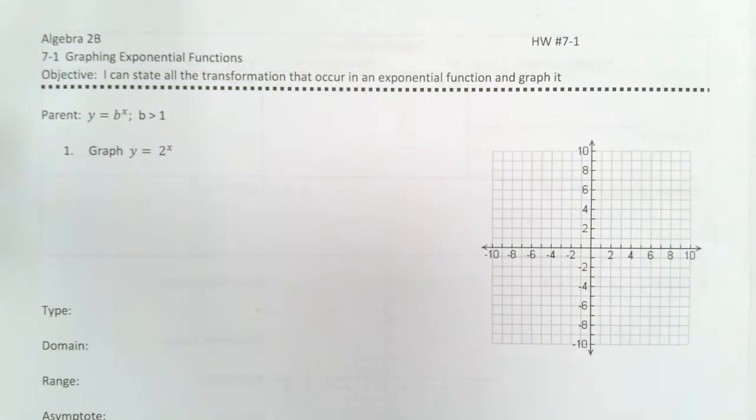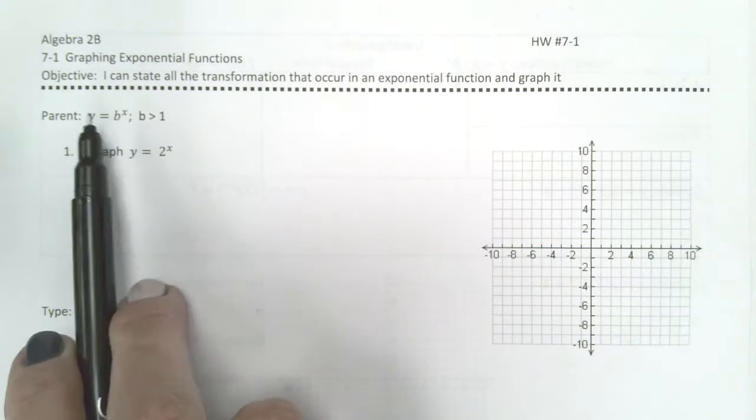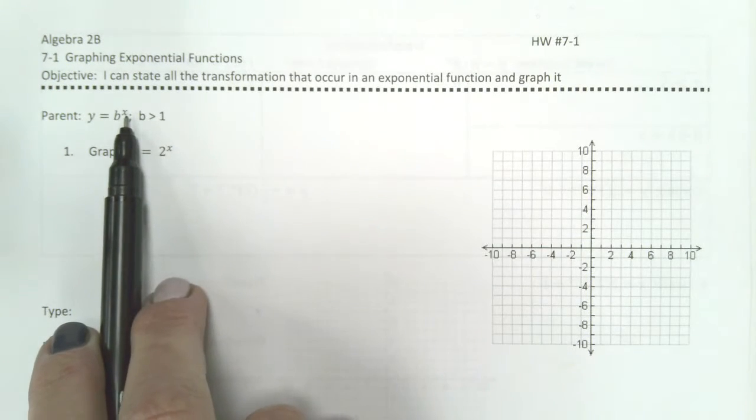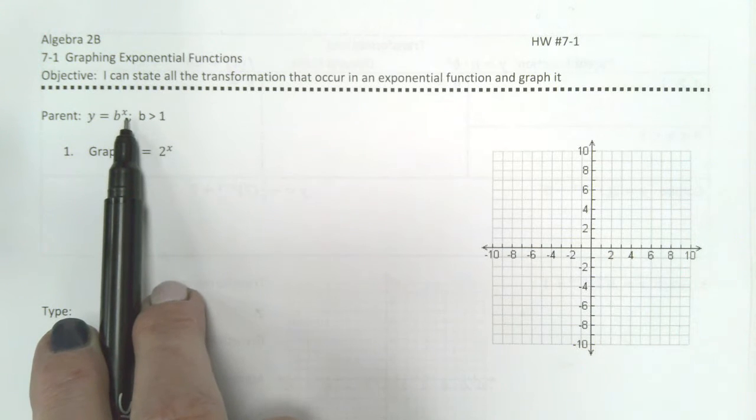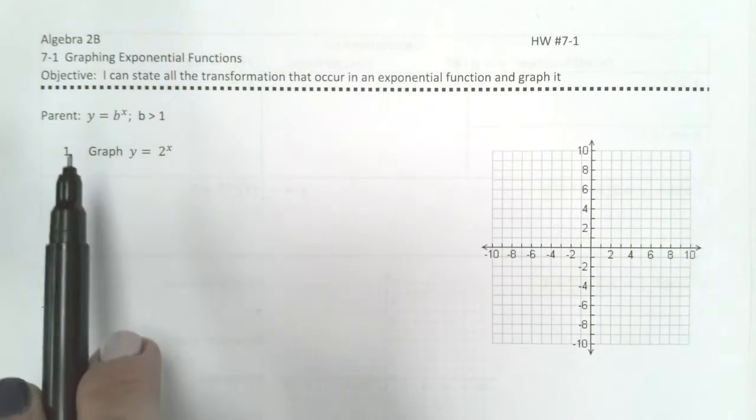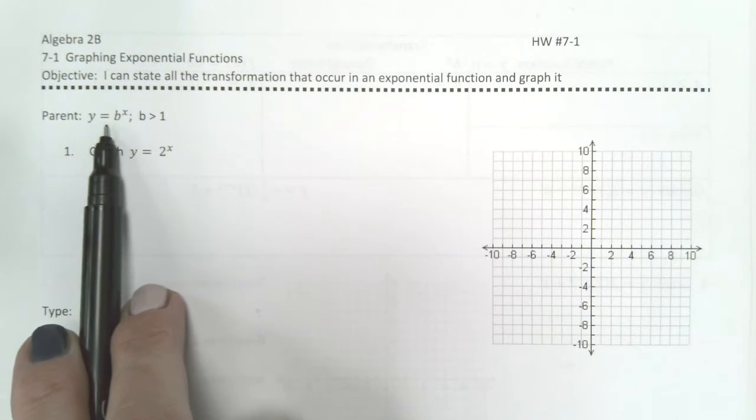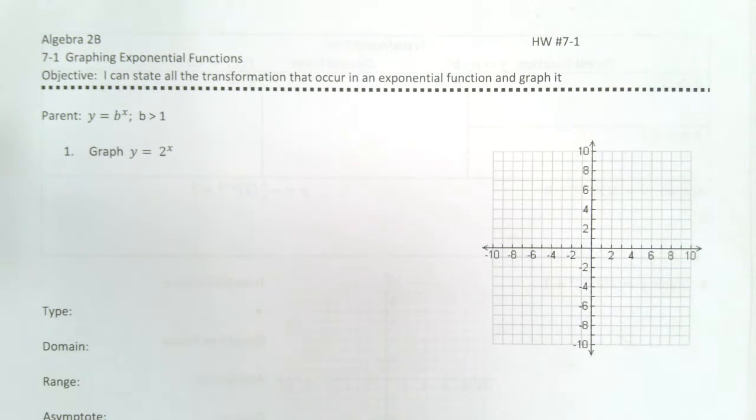Hi, Algebra 2. We're going to work on how to graph an exponential function. You can tell that something is an exponential function because the variable is in the exponent position. So your parent function here is y equals b to the x.